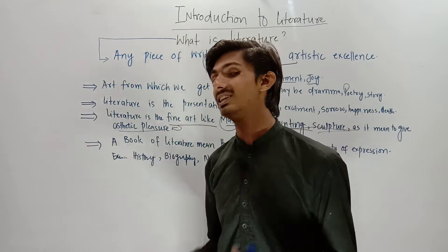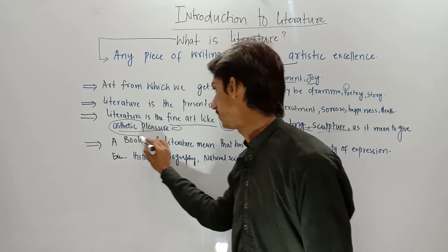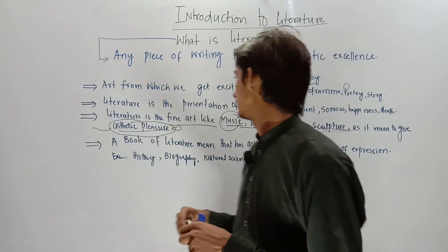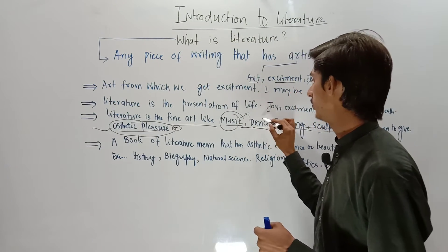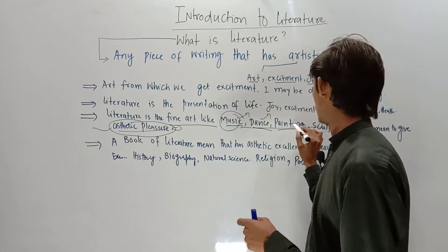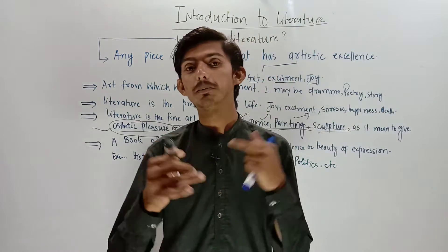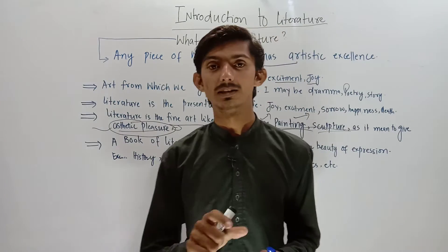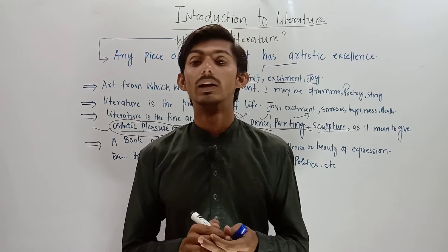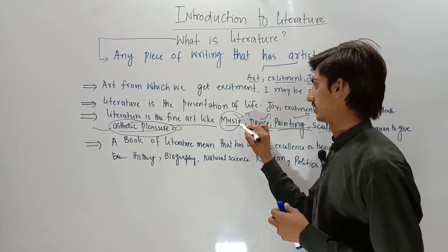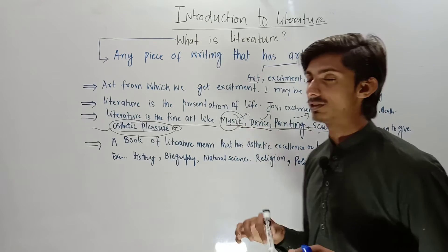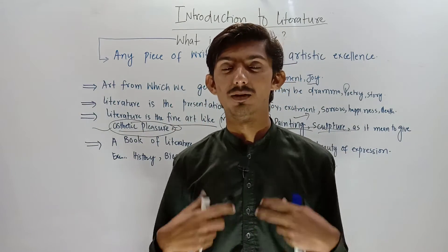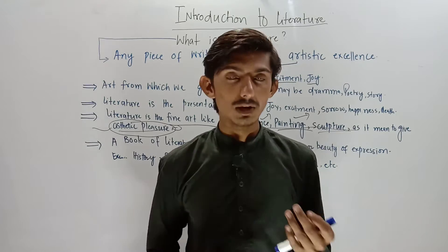Aesthetic pleasure means internal happiness. When we read, listen to music, watch dance, or view sculpture and painting, it gives us internal happiness — aesthetic pleasure. That is why we study literature. For example, music calms our mind, heart, and body, which is why we love to listen to it.